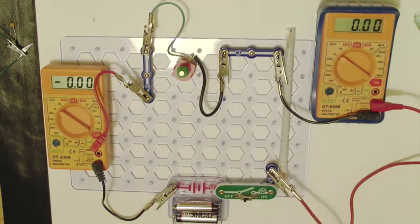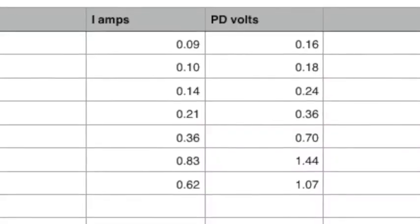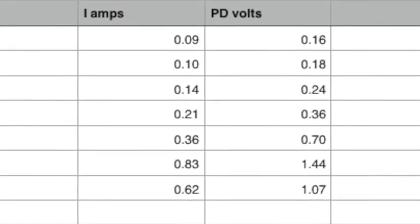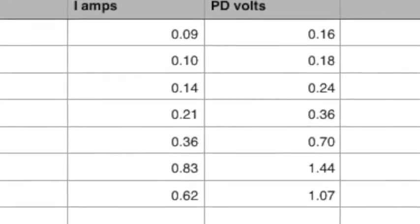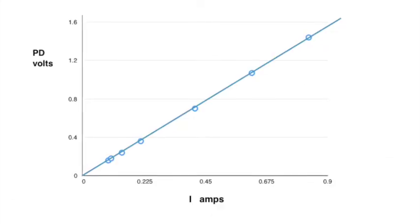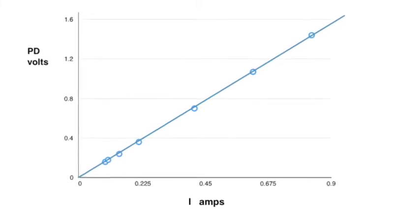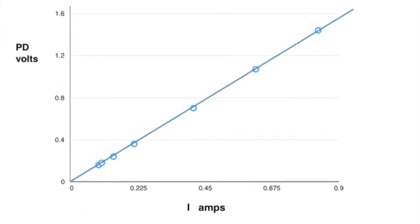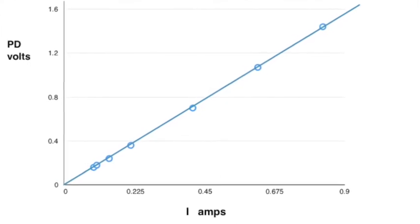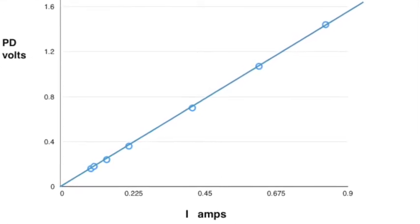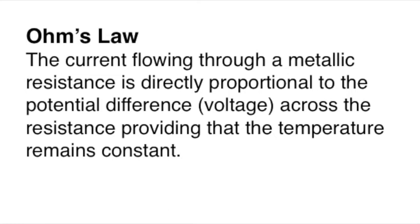From the table of results which you can see here, I'm going to draw a graph of potential difference plotted against current and as you can see that is a straight line graph. The current is directly proportional to the potential difference and this is in essence Ohm's law.